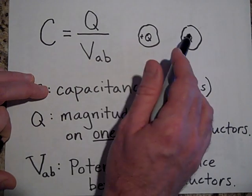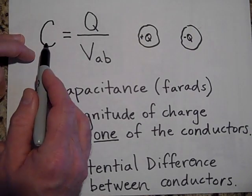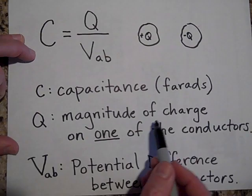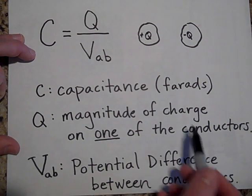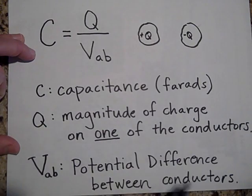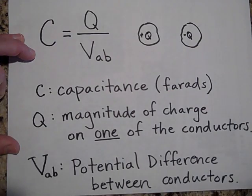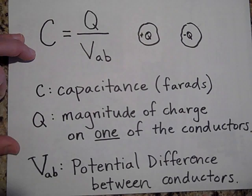Okay, so capacitance C is equal to Q, where Q is the magnitude of charge on just one of the plates. You don't add them both but just one, divided by the voltage between these two. So divided by how much, if you do your path integral from here to there, the voltage that you get will be what you divide by.